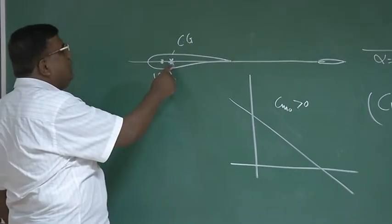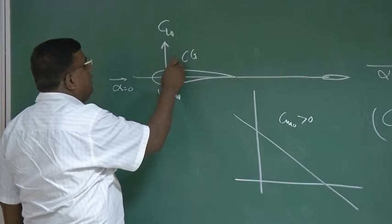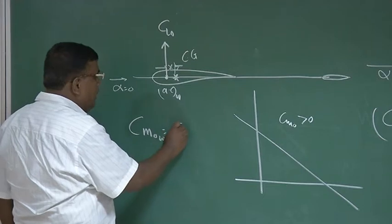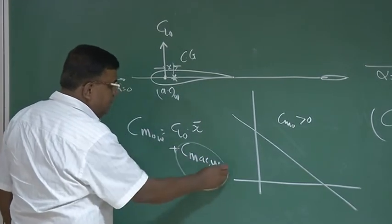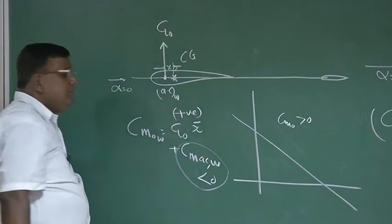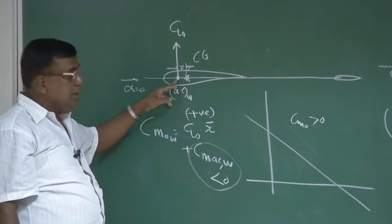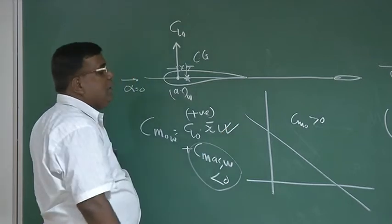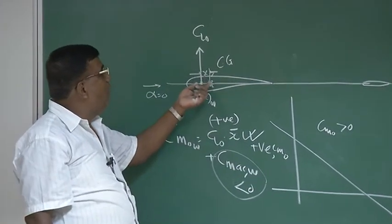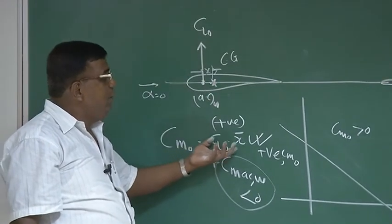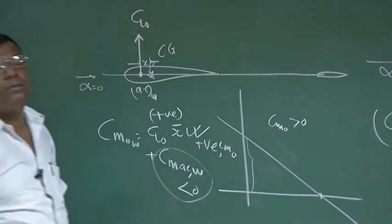The moment I put the AC of the wing ahead of CG, check at alpha equal to 0: there is CL0, and this distance is x. So now CM0_wing will be CL0 into x-bar (which is x divided by chord) plus CM_AC_wing which is negative. But now CL0 into x-bar is positive, because the AC is ahead of CG. You can see that if I put a wing having a cambered aerofoil and ensure that AC of the wing is ahead of CG, then this term will give a positive CM0.